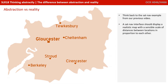Well, let's take a step back and think about our SatNav example from the previous video. A SatNav interface would display a realistic map with a sensible scale of distances between locations in proportion to each other.